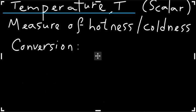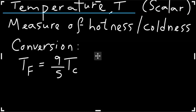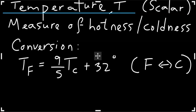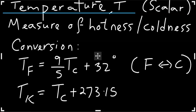Now let's look at a few conversions. To convert from degrees Celsius to degrees Fahrenheit, the conversion is given by: temperature in Fahrenheit equals nine-fifths the temperature in Celsius plus 32 degrees. This equation lets you go back and forth between the Fahrenheit and Celsius scales. The second conversion is between Kelvin and Celsius: temperature in Kelvin equals temperature in Celsius plus 273.15.